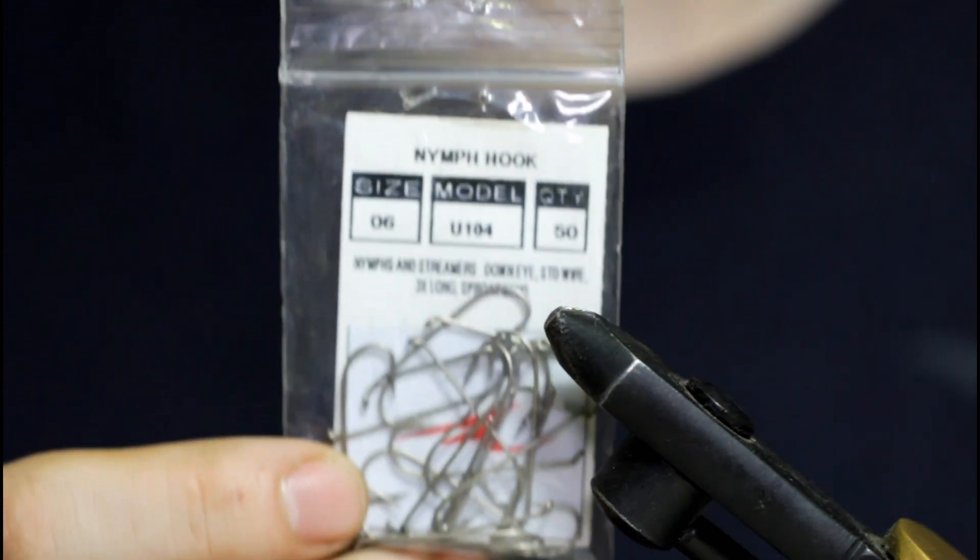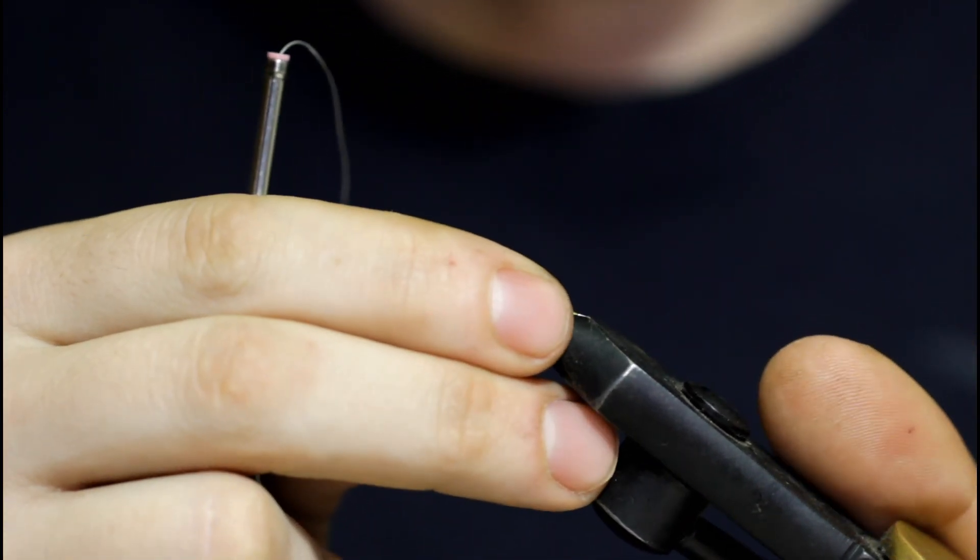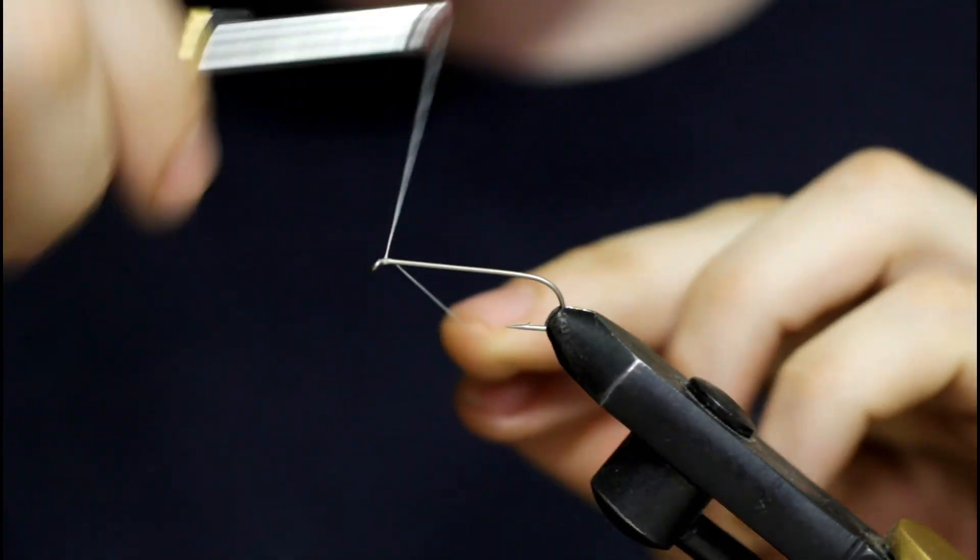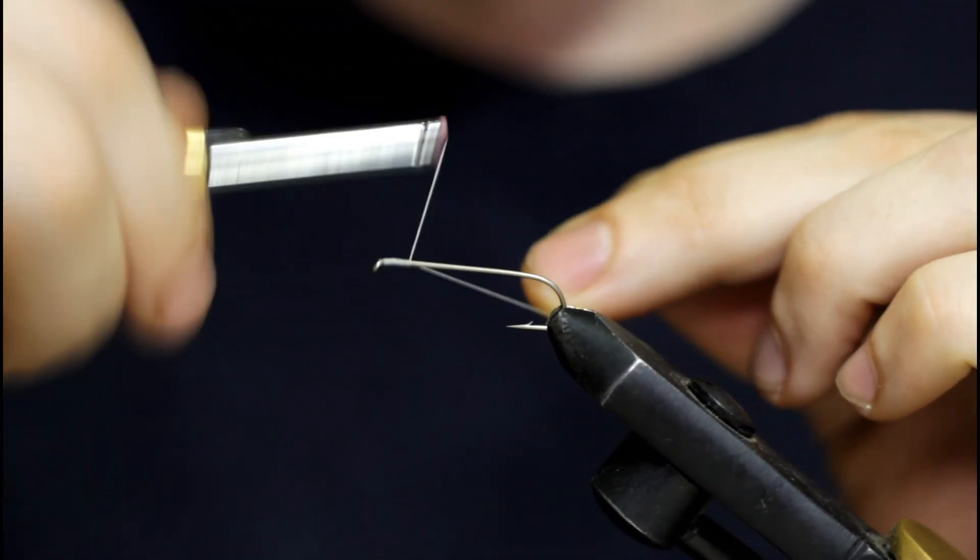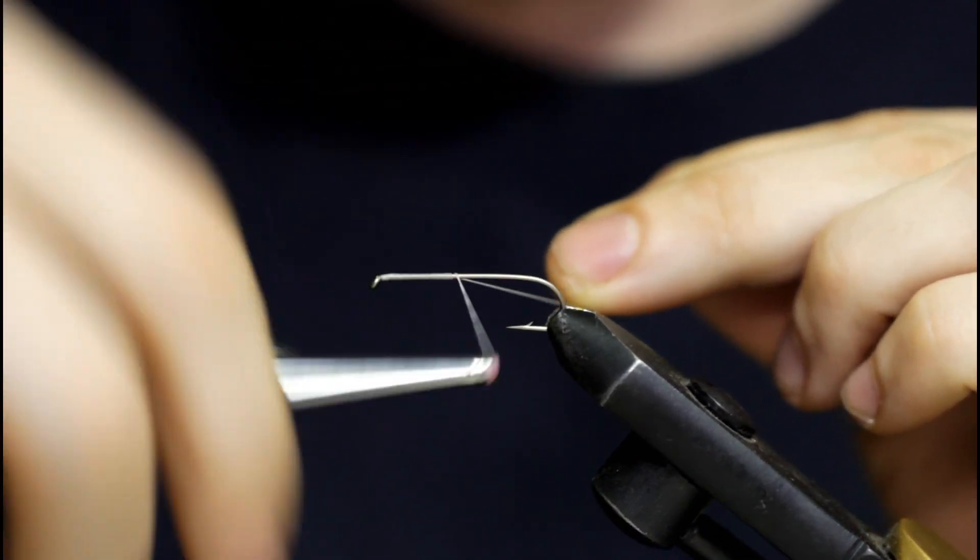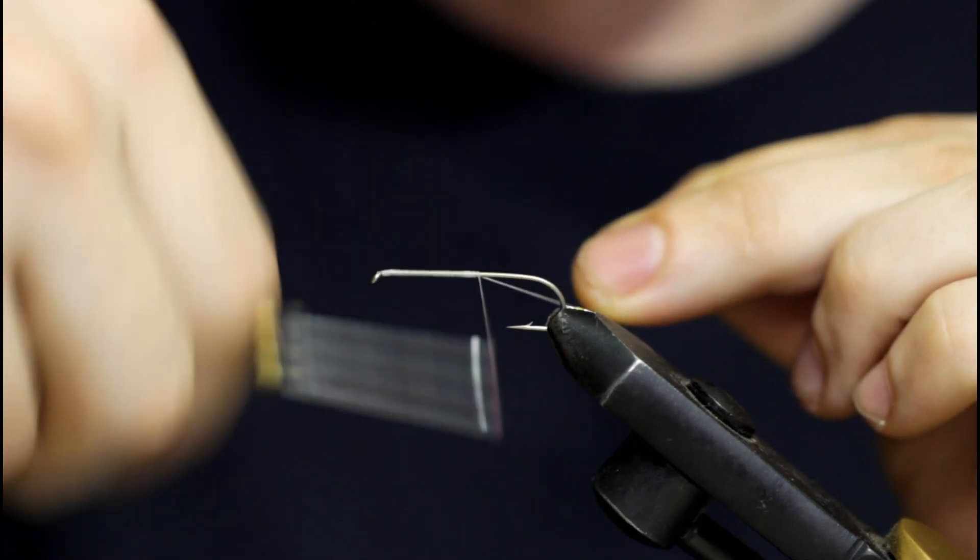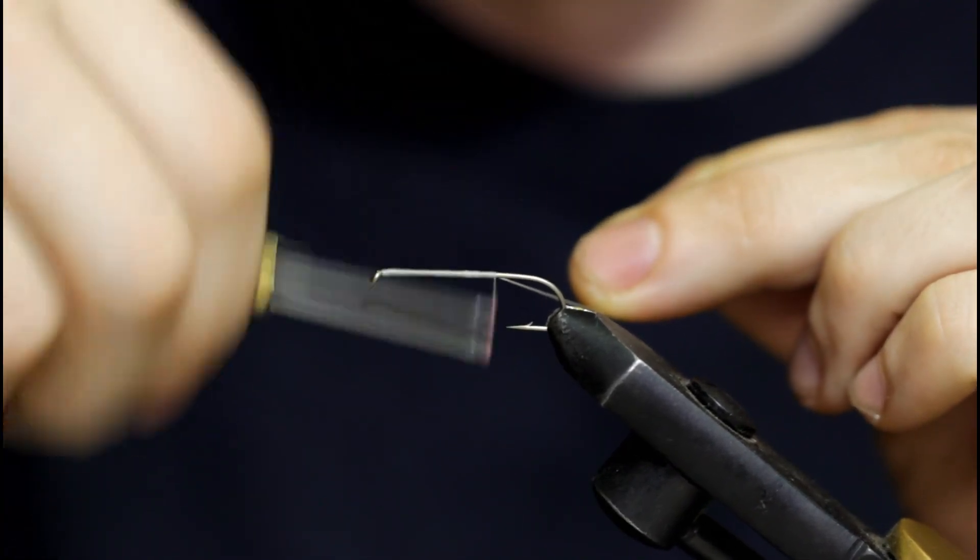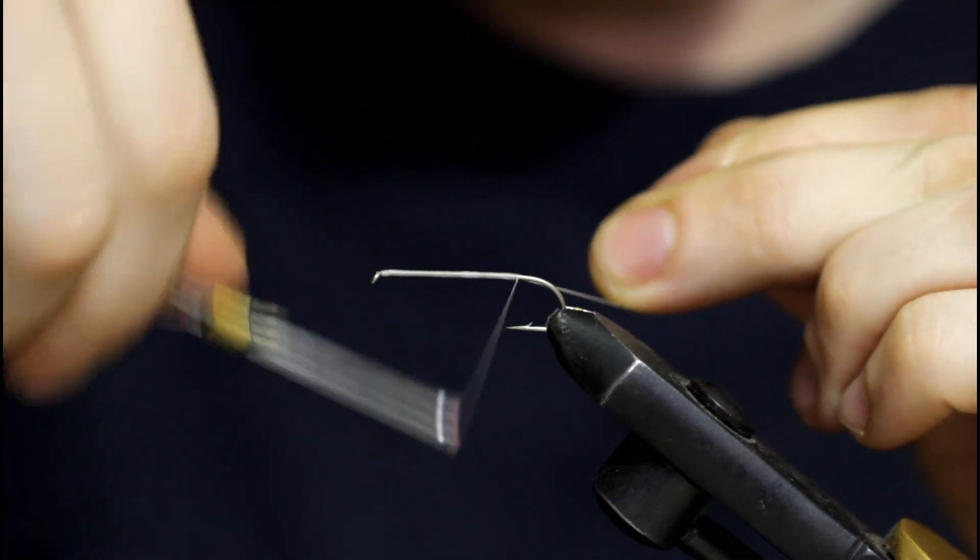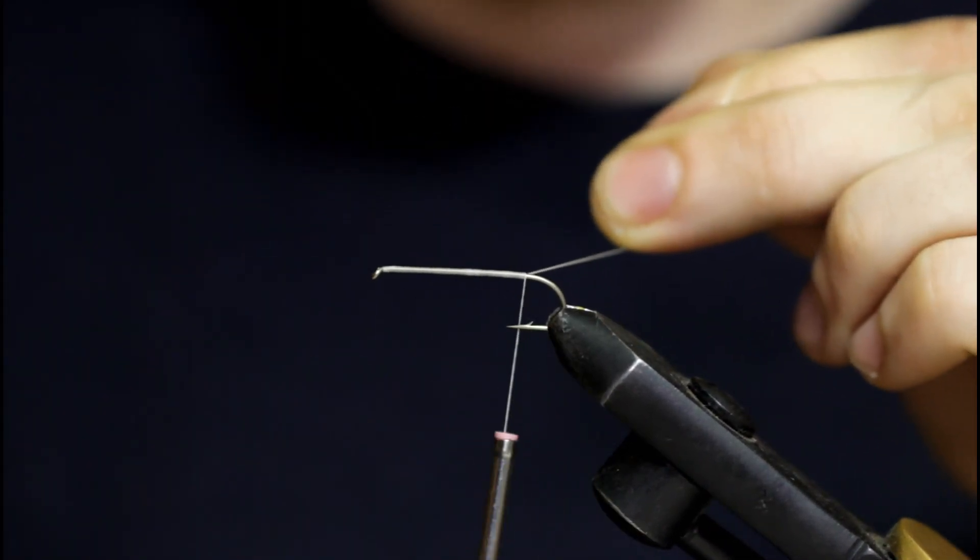Now I'm going to grab my size 8 nymph streamer hook, place that in the vise with the same UTC thread. Just work my way down, building up a nice thread base here to about the barb of the hook.